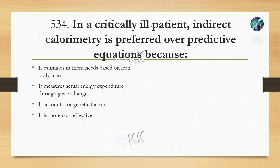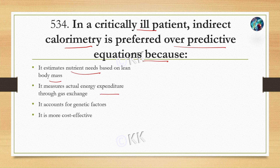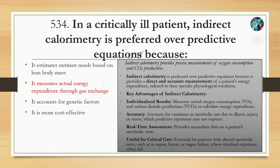In critically ill patients, indirect calorimetry is preferred over predictive equations because — Option A: to estimate nutrient needs based on lean body mass, Option B: to measure actual energy expenditure through gas exchange, Option C: it accounts for genetic factors, Option D: it is more cost efficient. The correct answer is Option B: it measures actual energy expenditure through gas exchange.